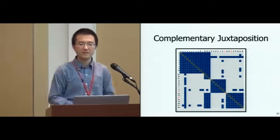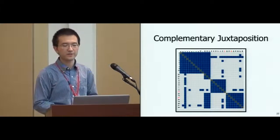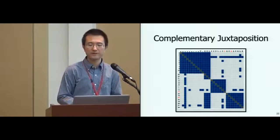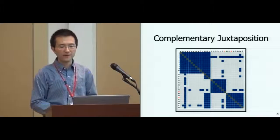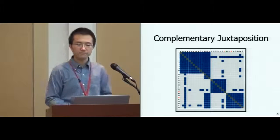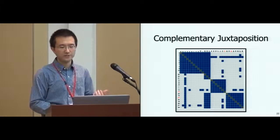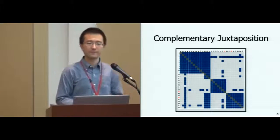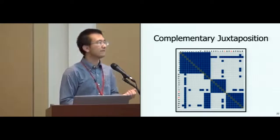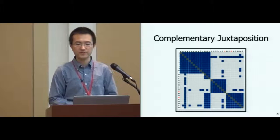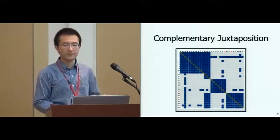Another design we propose is called complementary juxtaposition, which takes two triangular matrices together to form a compact square matrix. The positions of cells in the two matrices are symmetric with respect to the main diagonal. This design is a variant of the back-to-back juxtaposition and only applies to triangular matrices.